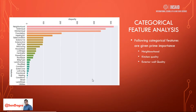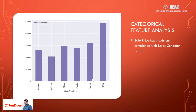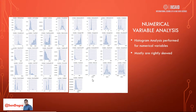Apart from numerical data, there was also categorical data in the dataset which we separated and analyzed. Key categorical features affecting pricing include: neighborhood, exterior quality, wall quality, kitchen quality, and foundation. In the categorical feature analysis, we found that sale conditions have a high correlation with sales price. We also performed histogram analysis on numerical variables.